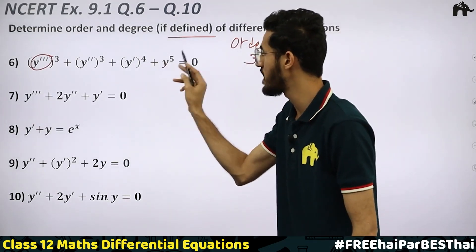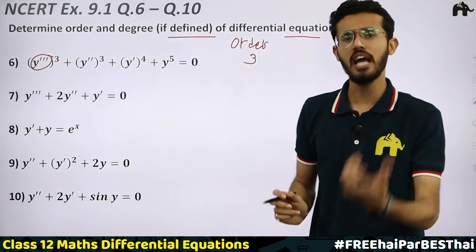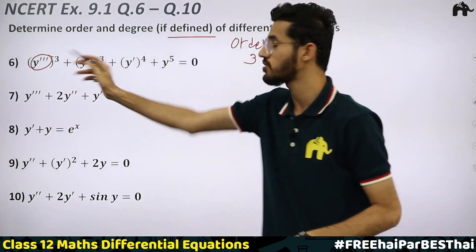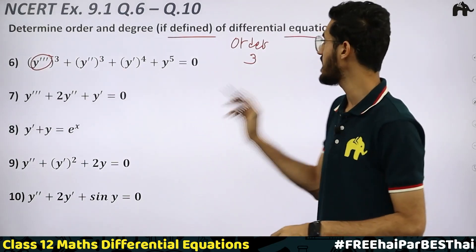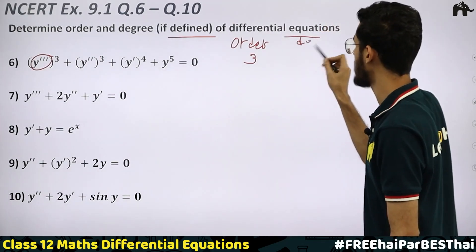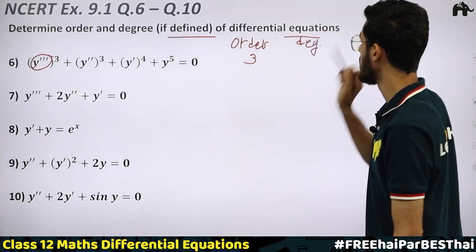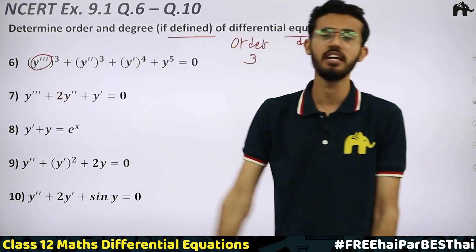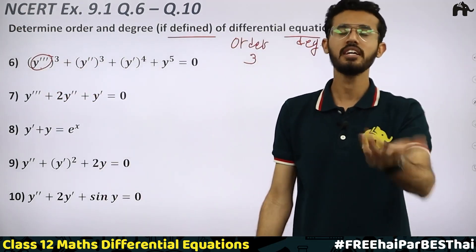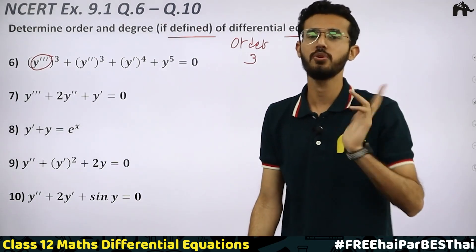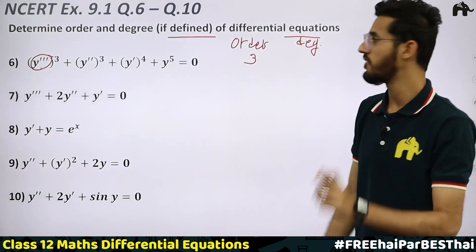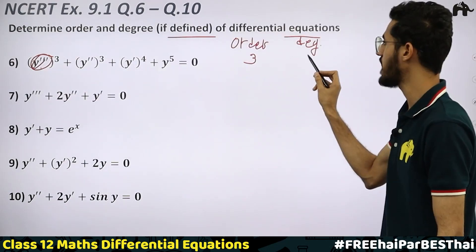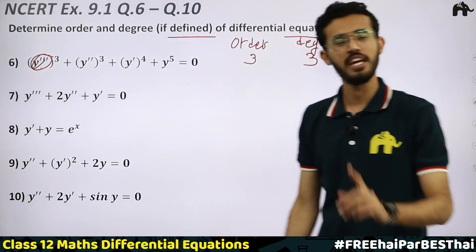Now the highest power here is 5, but is that the power of the highest order derivative? No. When we check degree, we look only at the power of the highest order derivative. The power of y‴ is 3, so the degree is also 3.